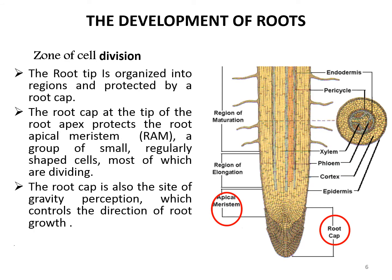Looking at the vertical section of the root from bottom to top, it shows various tissues and sections. These sections are typically the zone of cell division, the elongation zone, the maturation zone, and the matured zone. The root tip includes two subsections: the root cap and the meristematic region. A meristem is any part of a plant where cells divide rapidly, forming new cells. The root cap at the tip of the root apex protects the root apical meristem, called RAM.